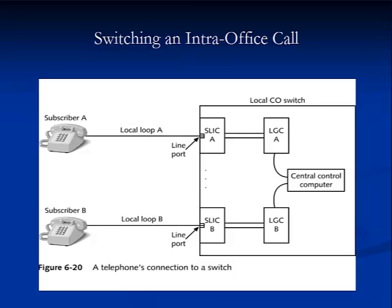First, the subscriber line interface unit, or SLIC, provides power to the telephone and detects off-hook conditions. After the incoming analog call passes through the SLIC, it is converted into a digital signal in a part of the switch known as the codec via PCM, or pulse code modulation techniques. The incoming signal is then detected by the line group controller, or LGC, a component that monitors the status of hundreds of SLICs. The SLIC in turn informs the central control computer that the subscriber wants to make the call, and the computer issues commands to establish the circuit between the subscribers.